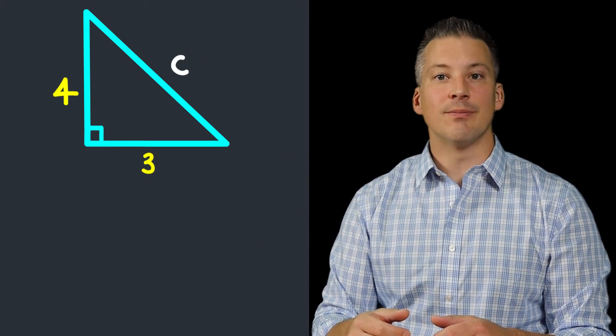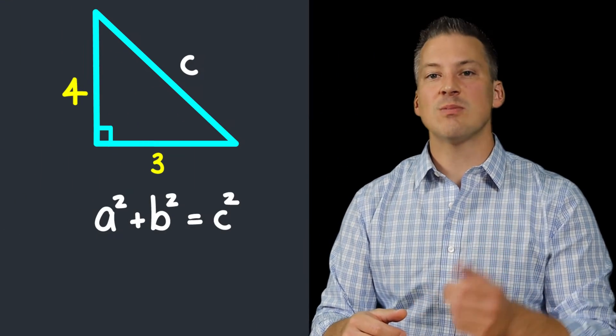Well, we can use Pythagorean's Theorem, right? Anytime we know two of the sides and we've got to figure out the third, doesn't matter whether it's the hypotenuse or one of the other sides, we can always use Pythagorean's Theorem. So let's plug it in.